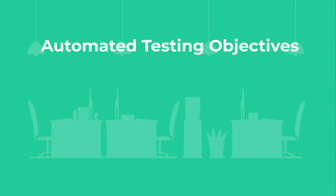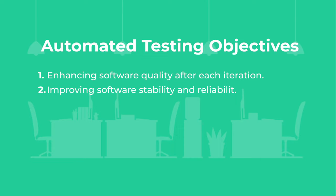The QA engineer can achieve these goals by focusing on the automation objectives. Number 1: enhancing software quality after each iteration. Number 2: improving software stability and reliability. Number 3: creating tests that are easy to run and maintain.